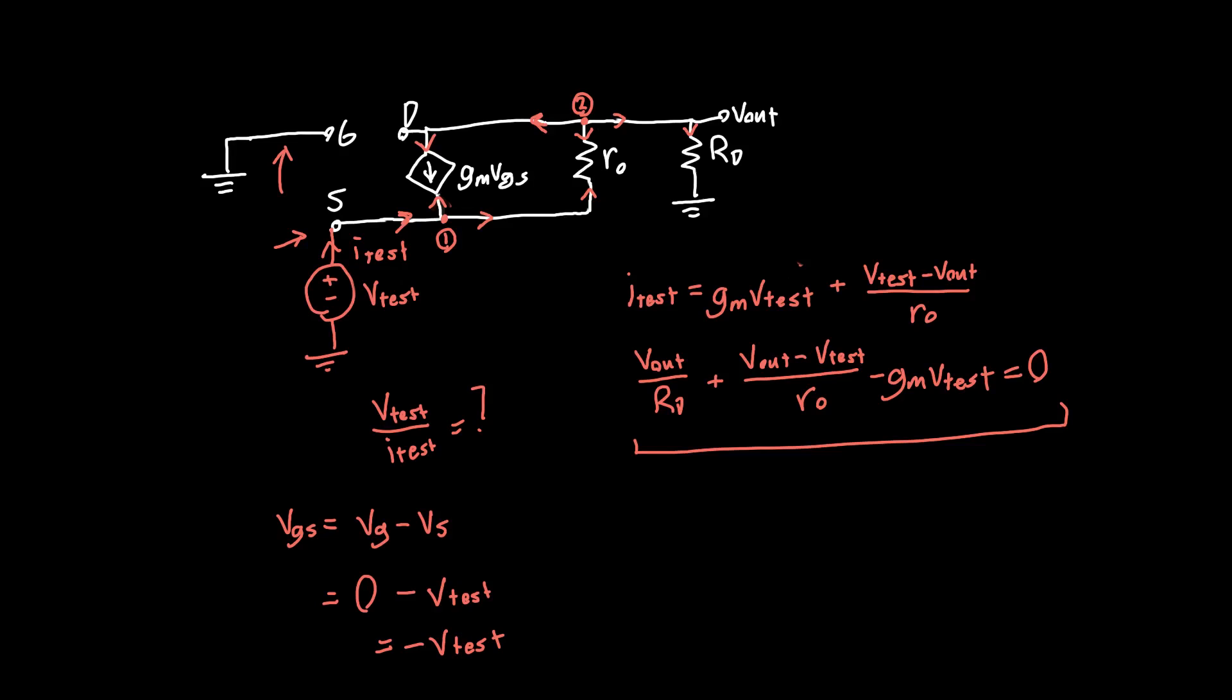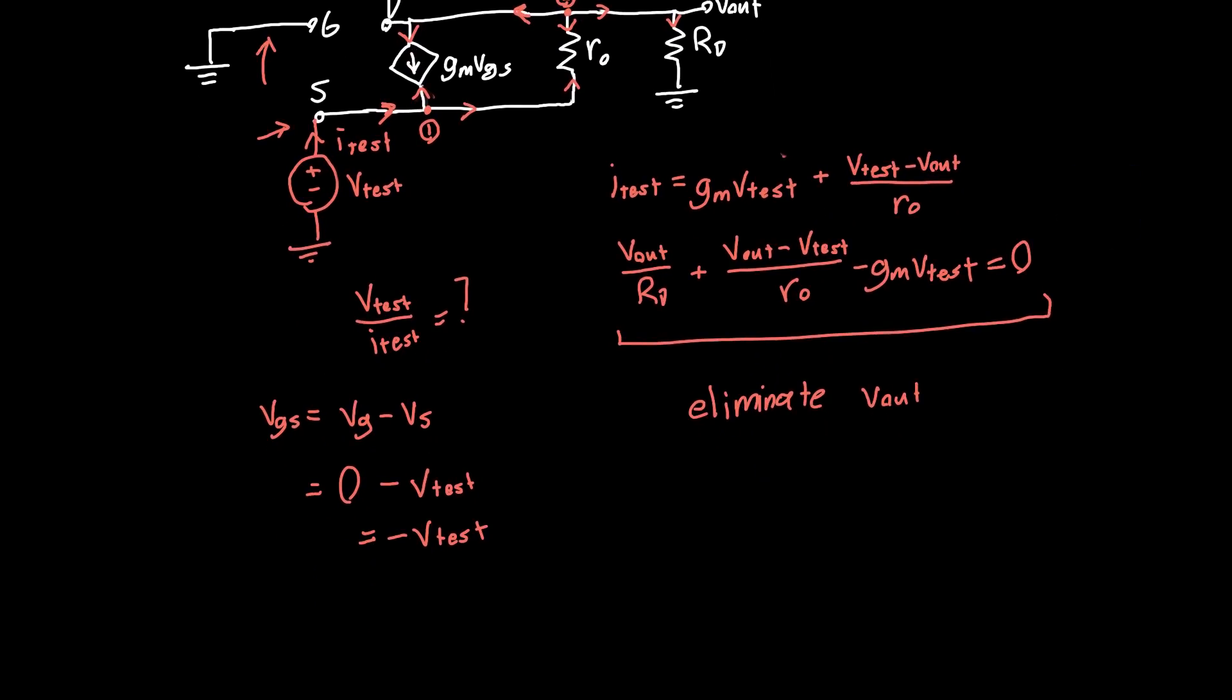Now, what we need to do is eliminate our remaining variable, V out. The way that I usually like to do this is just factoring everything. So, V out, 1 over RD plus 1 over RO, and then we've also got a V test term. Minus V test, because both of these terms are negative, 1 over RO plus GM.